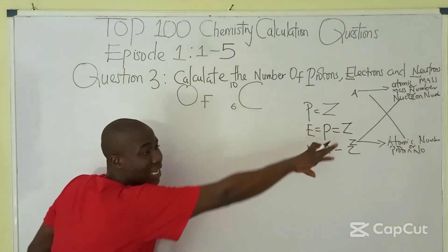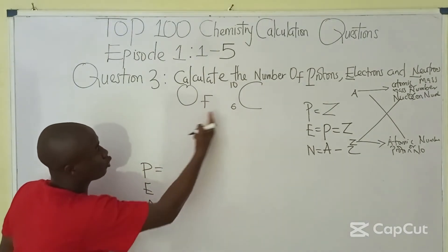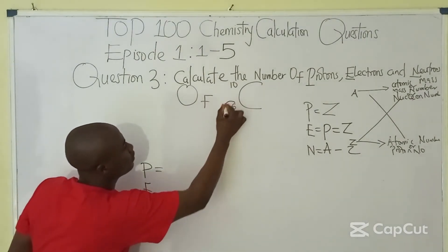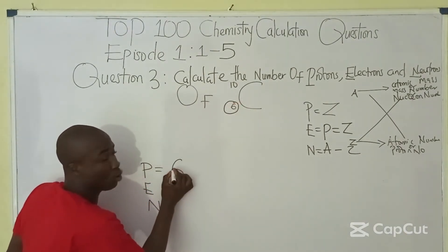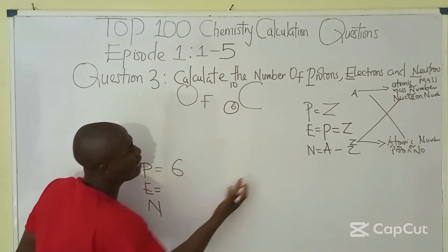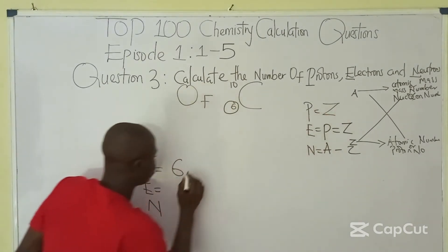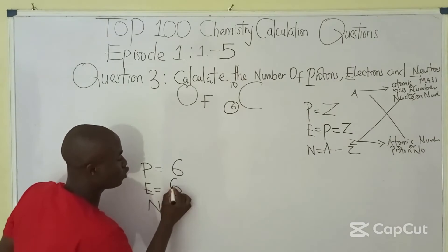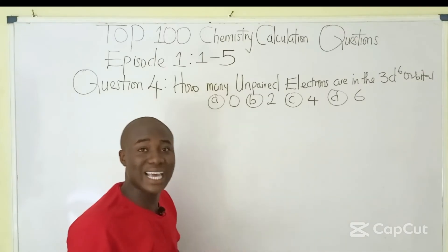Applying this to ¹²C₆: the proton number is 6, and since it's a neutral atom, the electron number is also 6. The neutron number would be A − Z = 12 − 6 = 6.